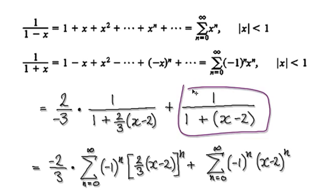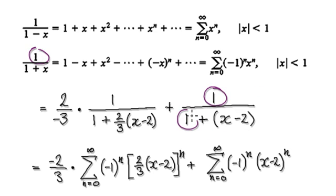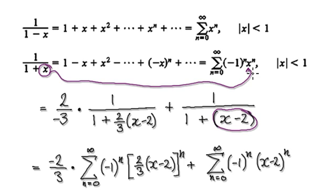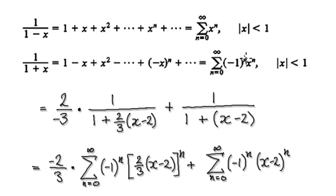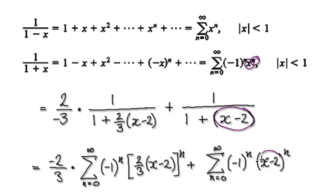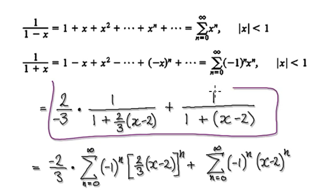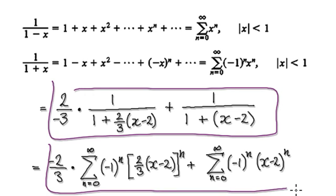And then now looking at this, this is of this form, and now you can make use of this — so you can put this whole thing here as your x. That means you can put it into here. So this would be negative 1 to the power of n, and then you've got your bubble to the power of n, and then you've got your bubble here to the power of n. Well, this here is just a constant. So this whole thing here will then become this.